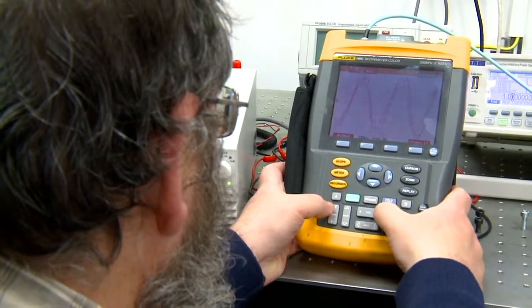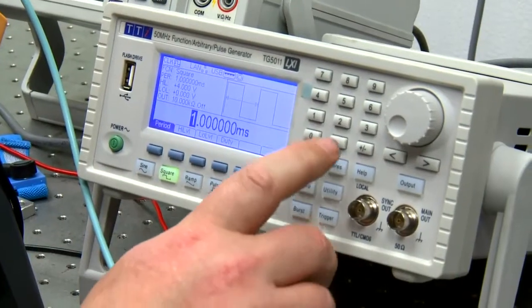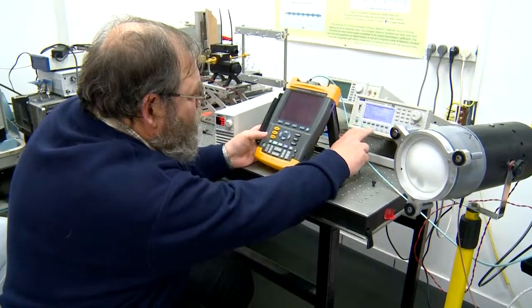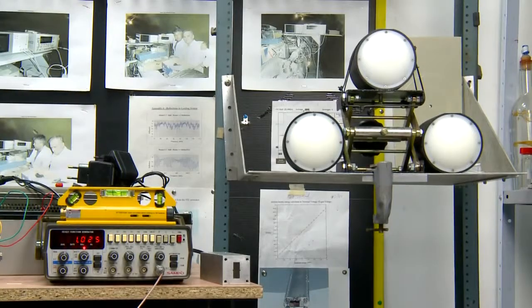10 feet or 3 meters is not the upper limit. The scientists continue their work on a stationary millisensor version development. It is able to detect hidden objects from up to 100 feet or 30 meters.